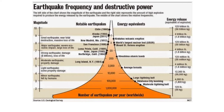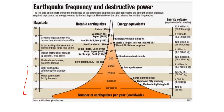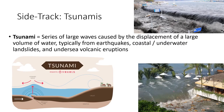Earthquakes are measured by the Richter scale, named after its inventor. It is a logarithmic scale, meaning each jump in magnitude represents a tenfold increase in severity. There are millions of very minor earthquakes every year; major earthquakes occur perhaps once or twice a year, sometimes zero.